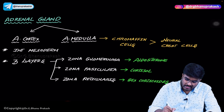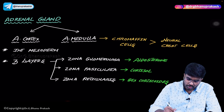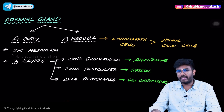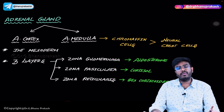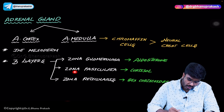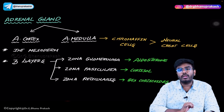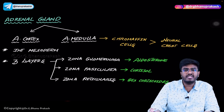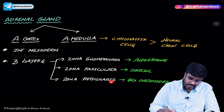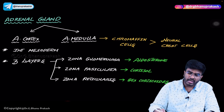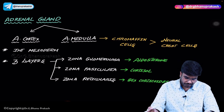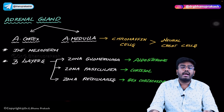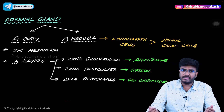Zona glomerulosa produces mineralocorticoids, for example aldosterone, because it is associated with mineral metabolism such as sodium regulation. Zona fasciculata produces glucocorticoids — for example cortisol — because it is associated with glucose metabolism. And zona reticularis produces sex corticoids, especially male sex corticoids.